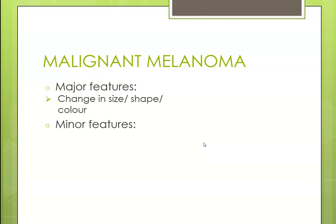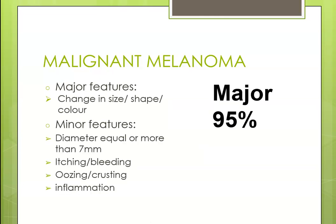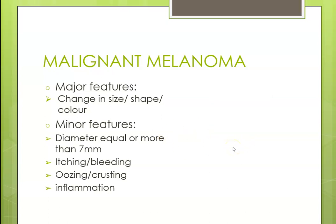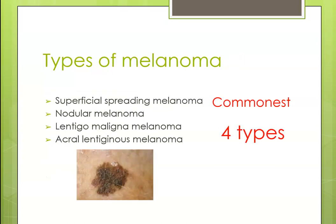For malignant melanoma, there are major features and minor features. The major features — changing size, shape, and color — are usually present in 95% of patients with the condition, whereas the minor features are present in less than 50%. There are four common types of melanoma, including superficial spreading melanoma.